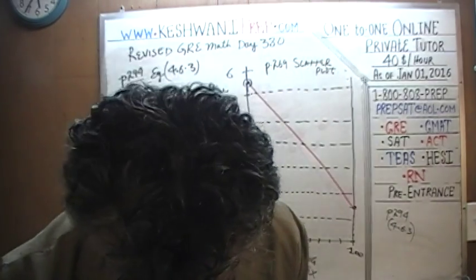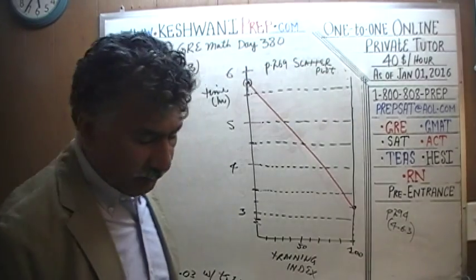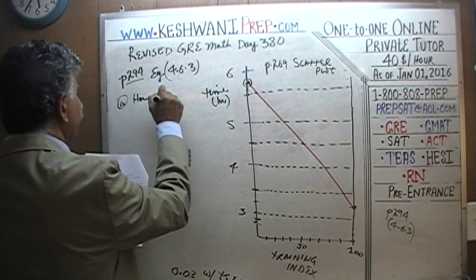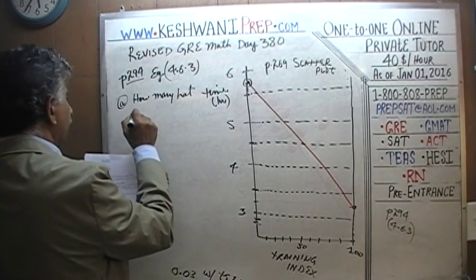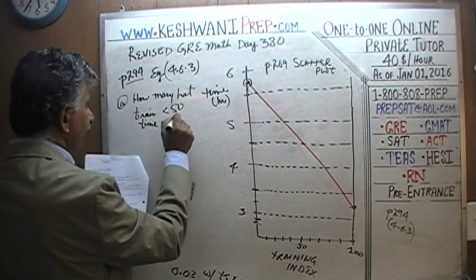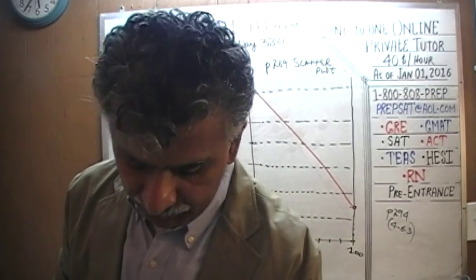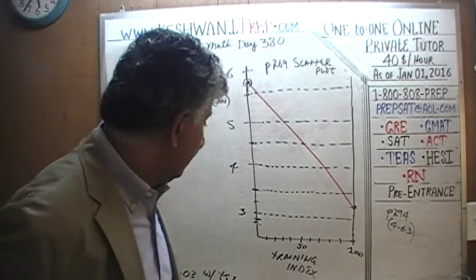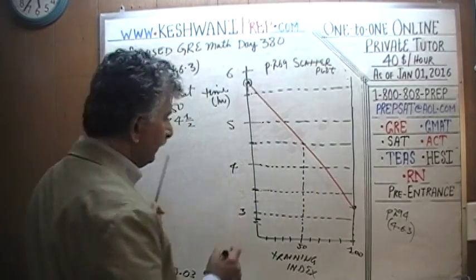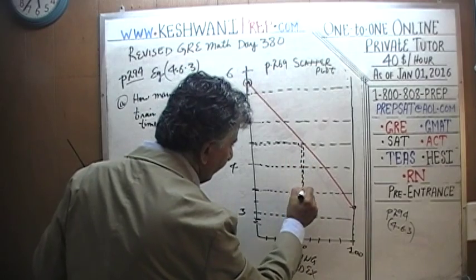Let's be ready to answer the question. The first question on page 294, problem 4.6.3 part A, asks: how many had training of less than 50 units and a finishing time of less than four and a half hours? Here's the 50 units mark, and four and a half is right here. This is the region we are interested in.